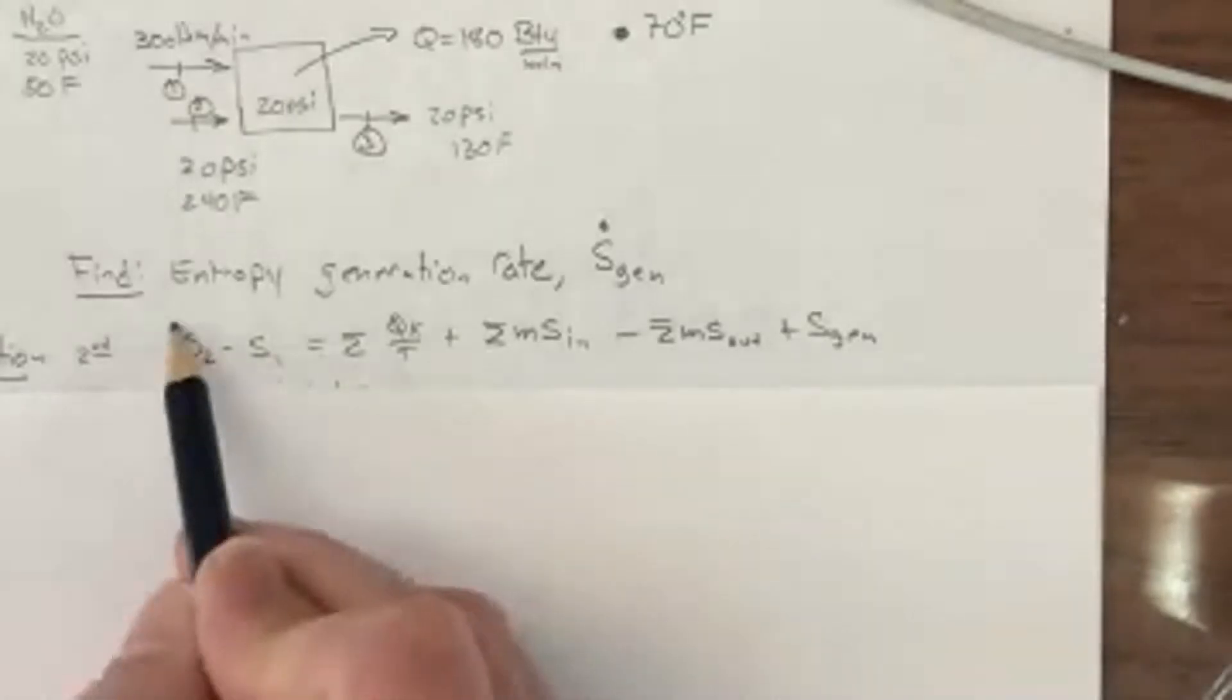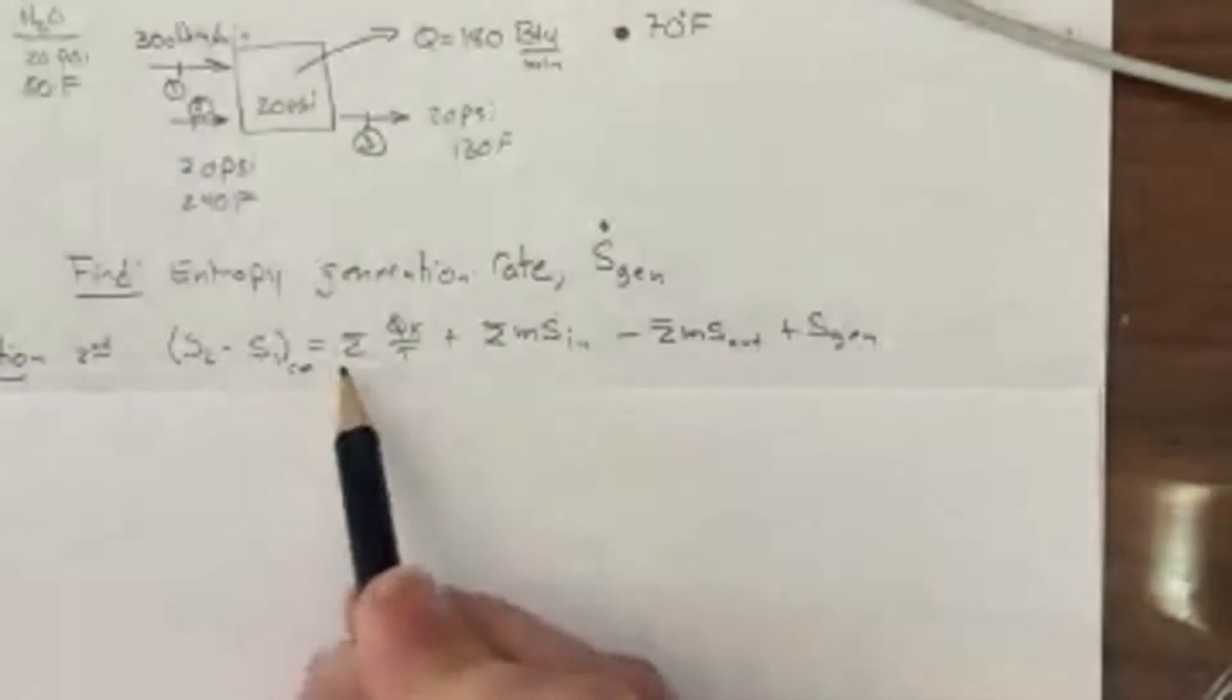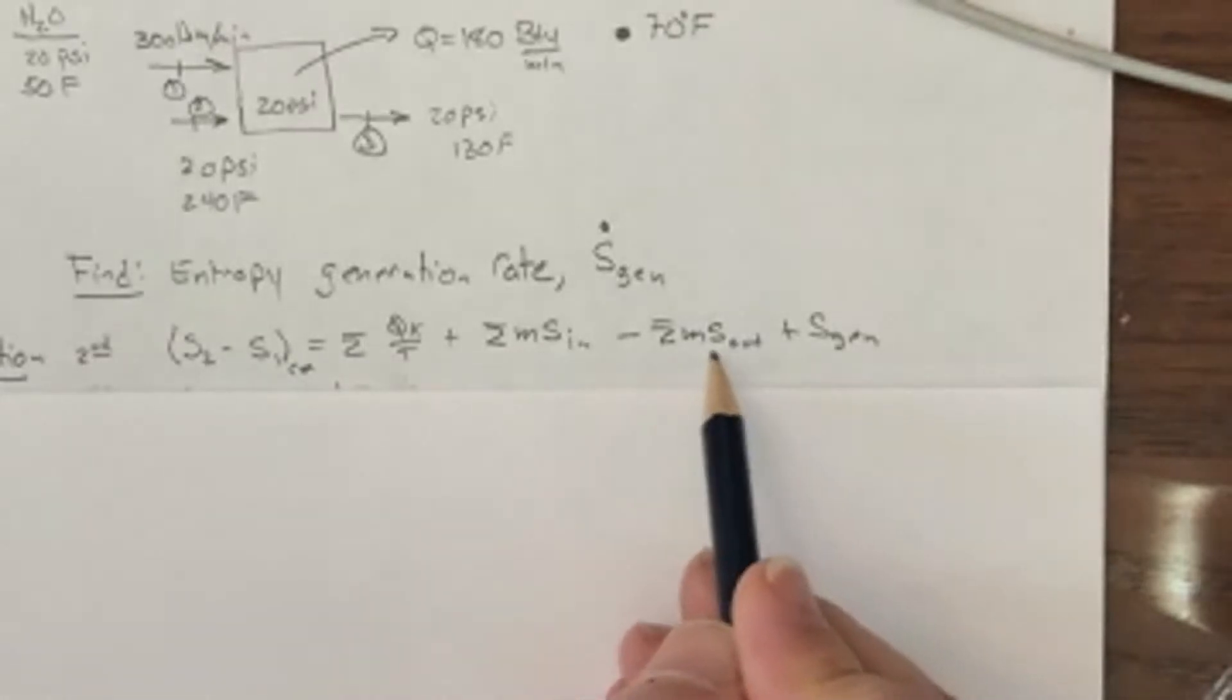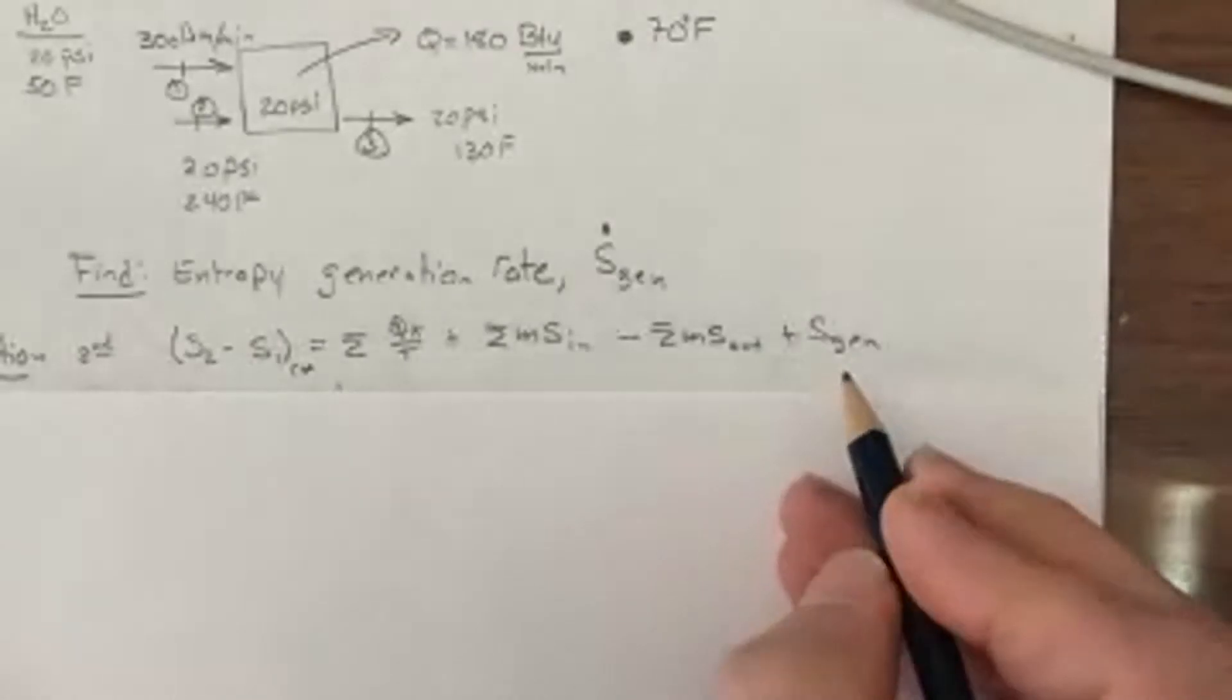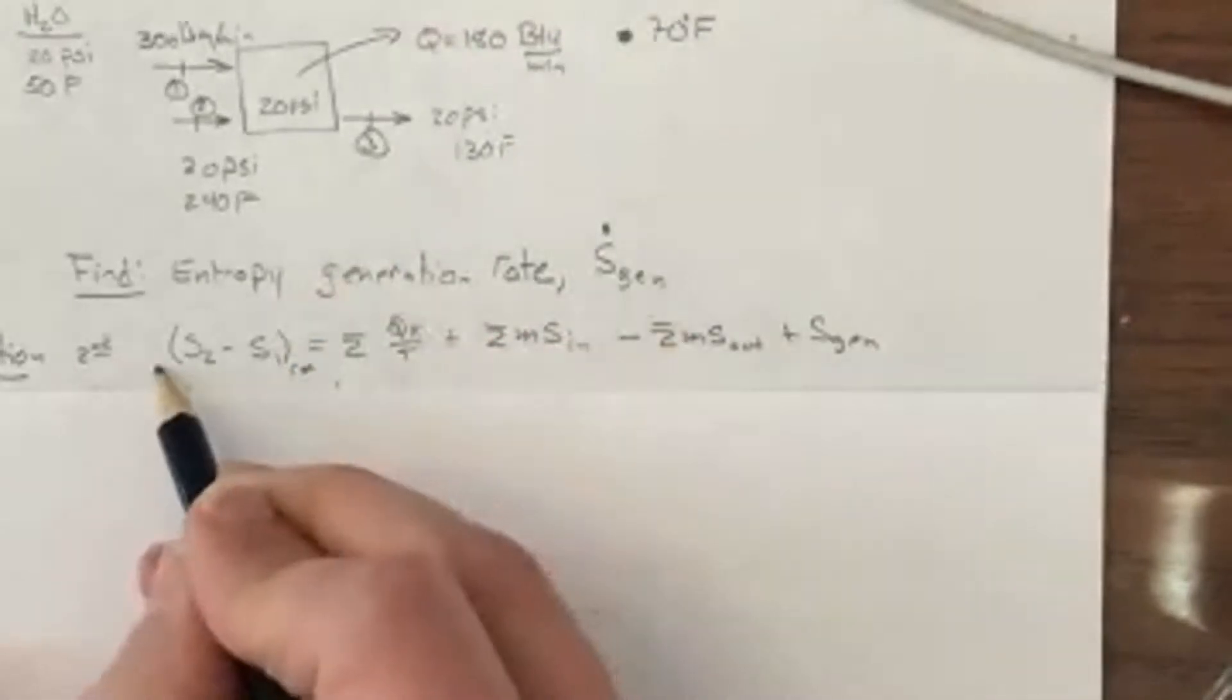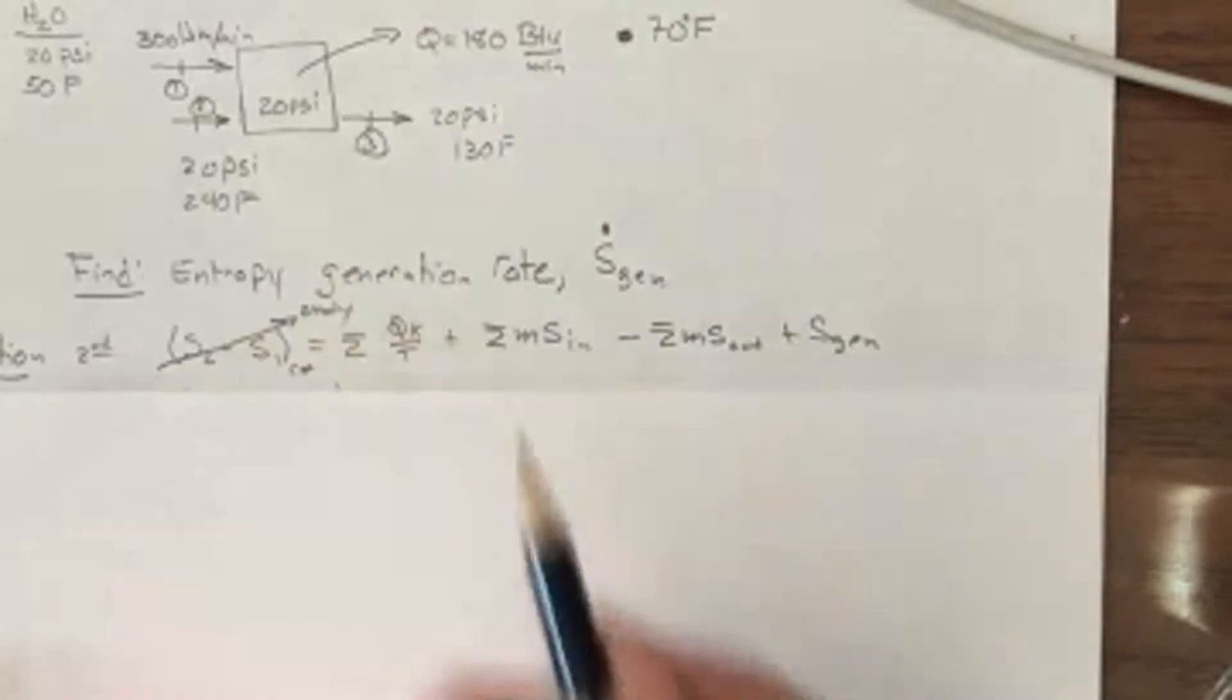So you have the change in the system, whatever's in the control volume, the entropy plus all the sums of the reversible heat exchange plus the mass of the entropy being carried in minus the mass and entropy being carried out plus this S gen term. Now this is being done in steady state, so the left hand side is zero. That's why it's gone.